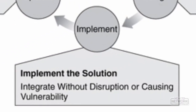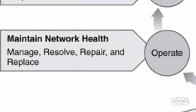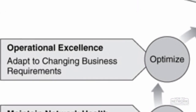In the Implement phase, new equipment is installed and configured according to the design specifications. Any planned network changes should be communicated in change control meetings with the necessary approvals to proceed. The Operate phase maintains the network's day-to-day operational health, including managing and monitoring network components and performing appropriate maintenances. The Optimize phase involves proactive network management by identifying and resolving issues before they affect the network.